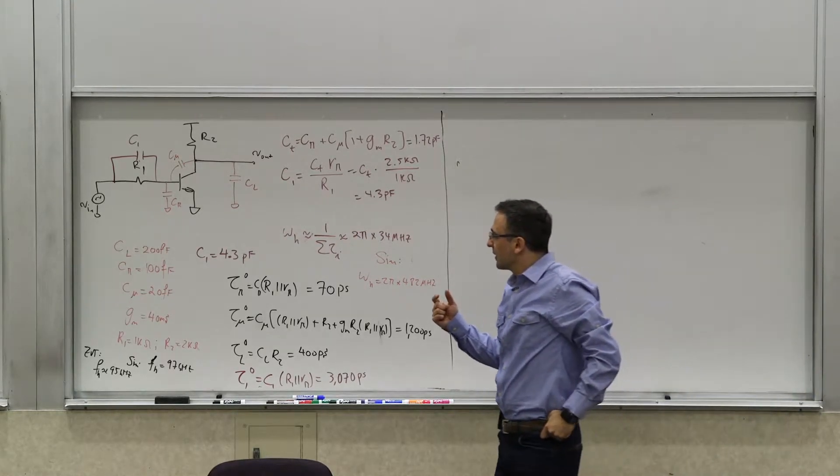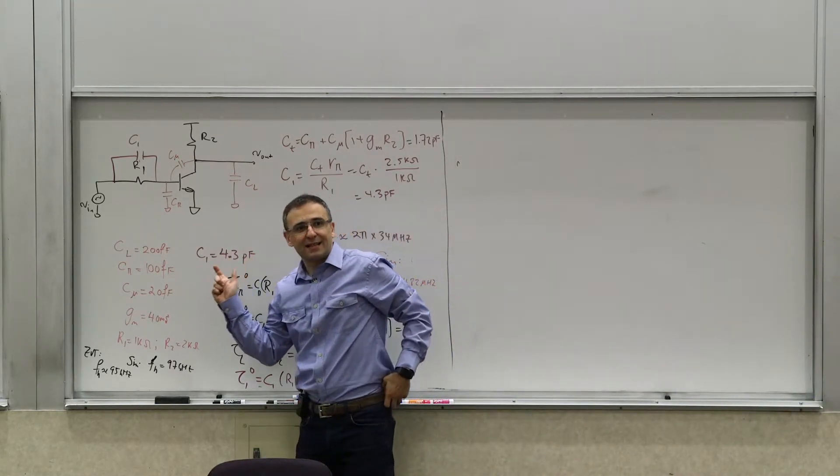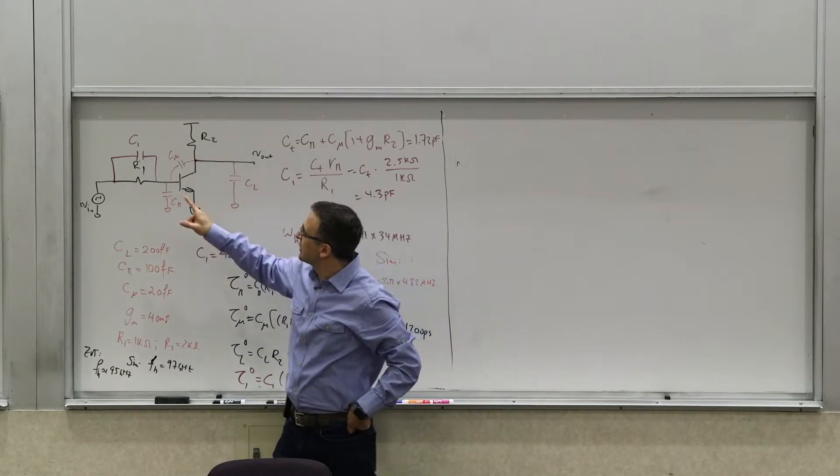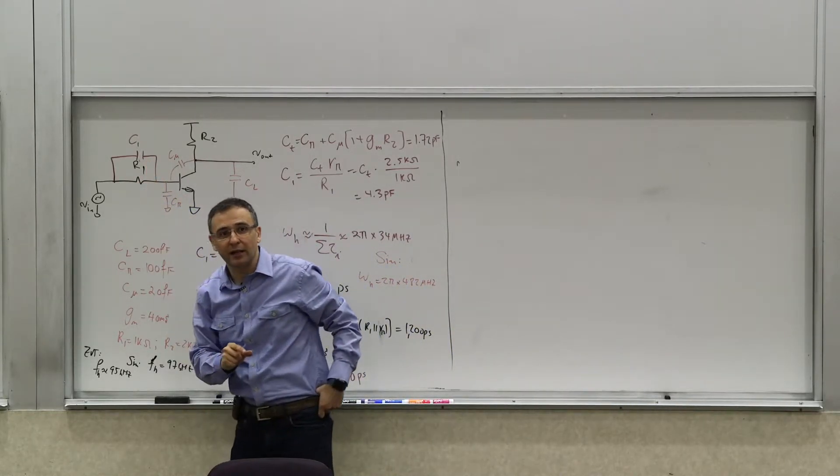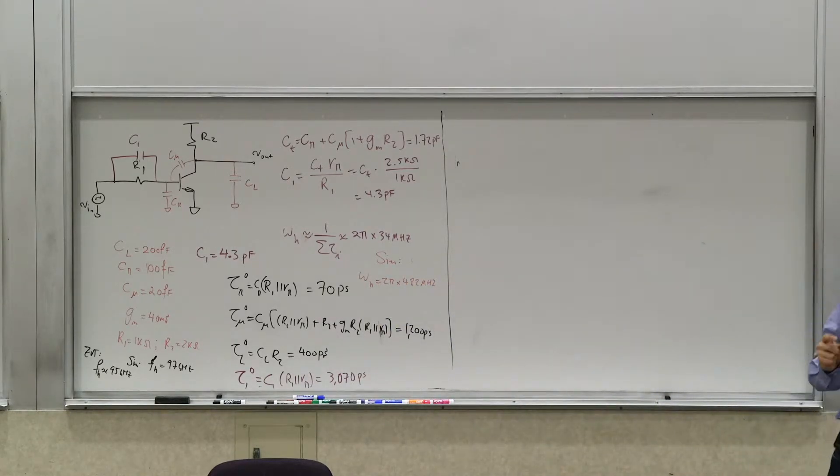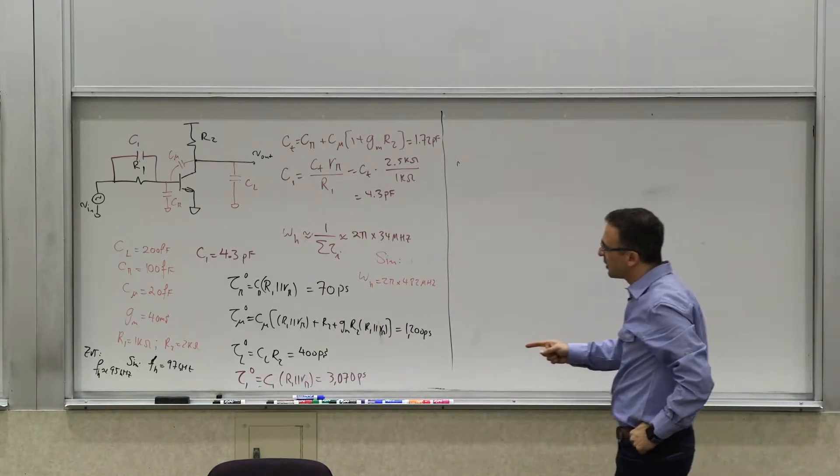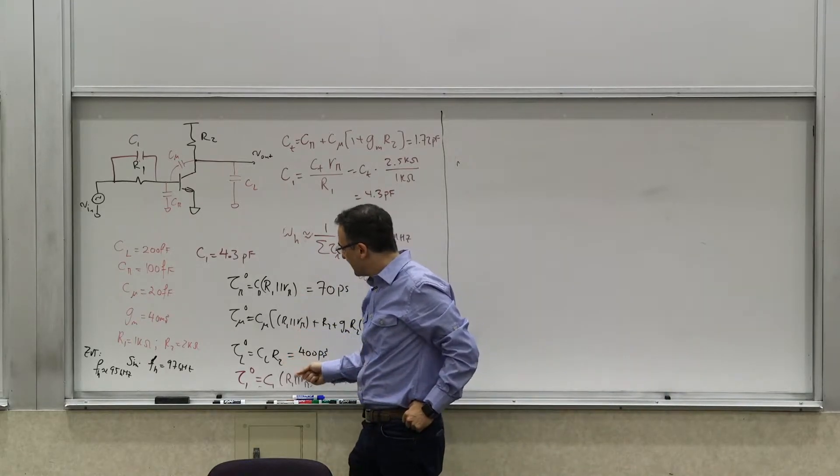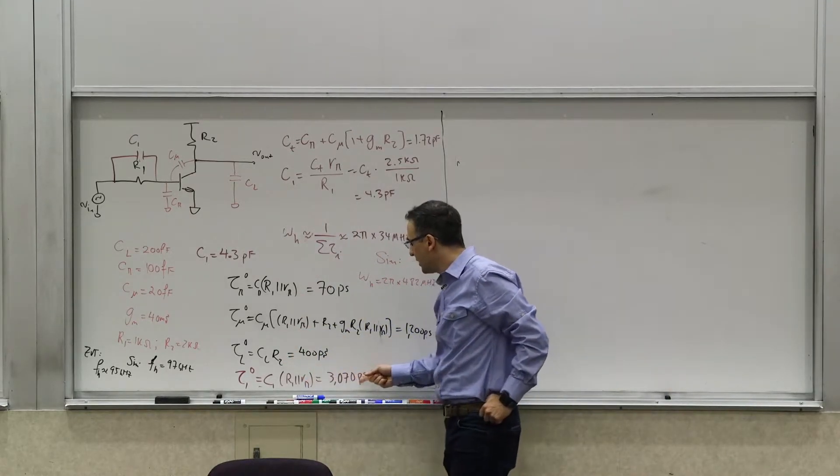All right, so before the break we looked at this example, right? Where we introduced this capacitor C1 at the input and we saw that as a result the bandwidth estimation from the zero value time constants, ZVTs, became significantly inaccurate.